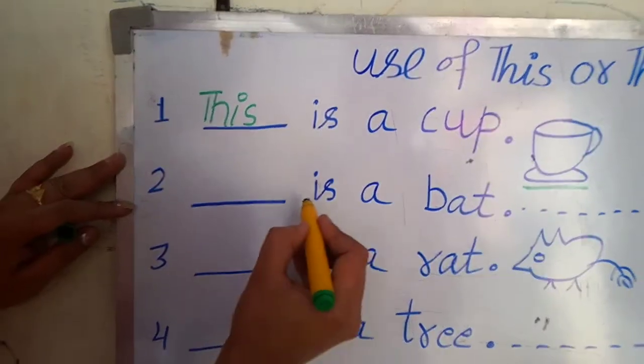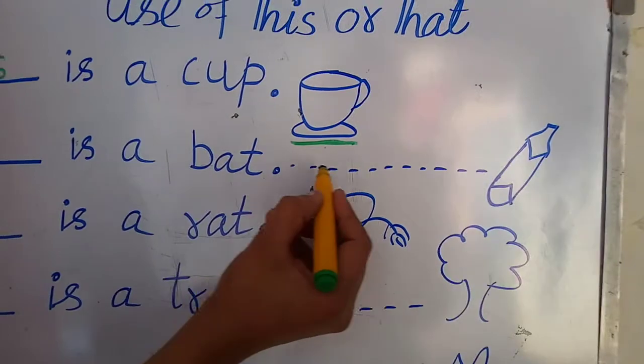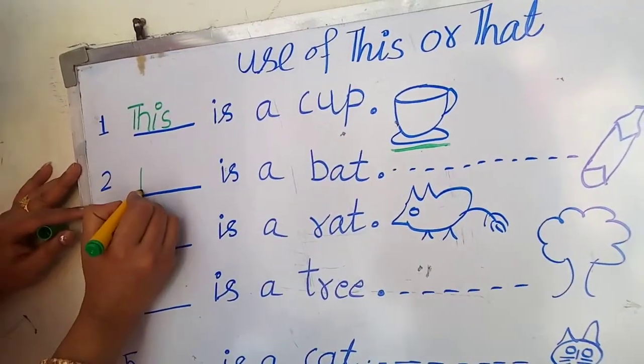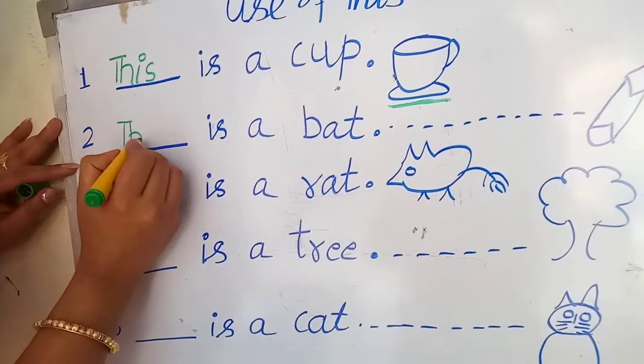Now the next is dash is a bat. You can see bat is far away, so we write down that. That. Very good. Excellent.